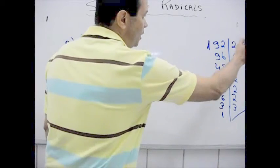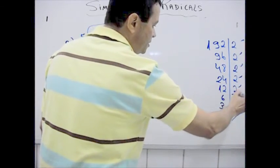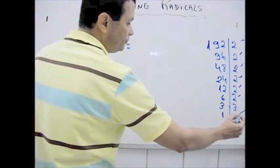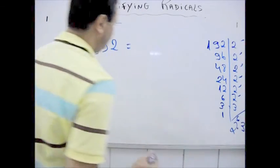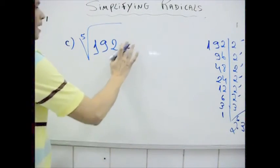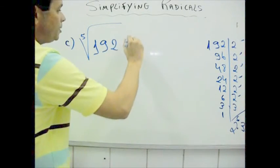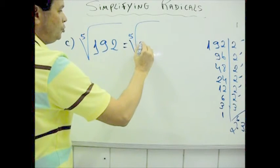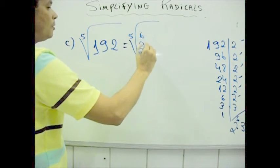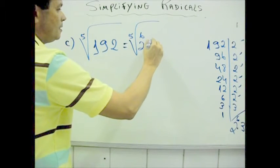1, 2, 3, 4, 5, 6, so 2 to the 6th power times 3. I'm gonna put here 2 to the 6th power times 3.